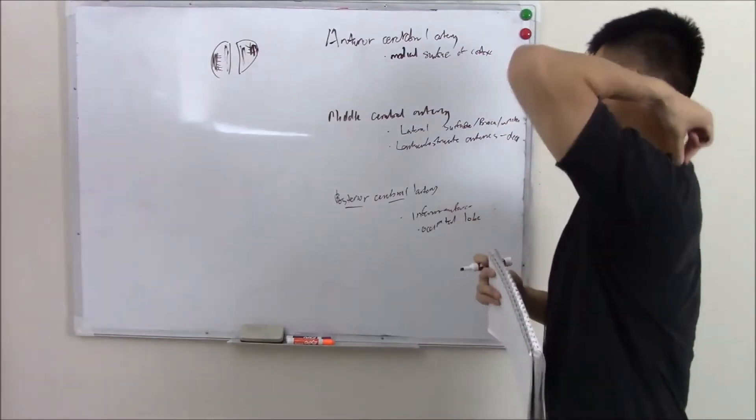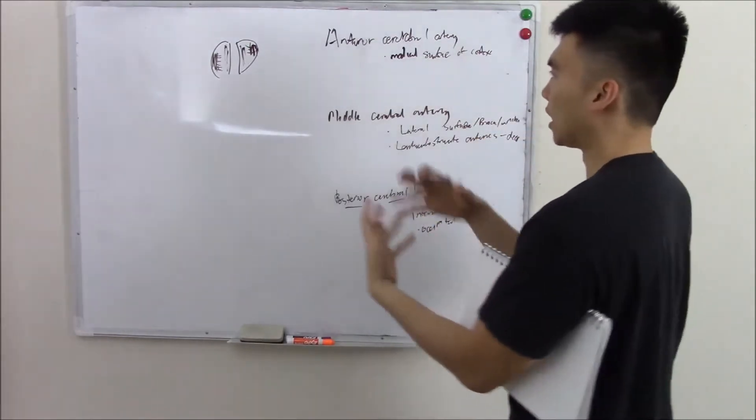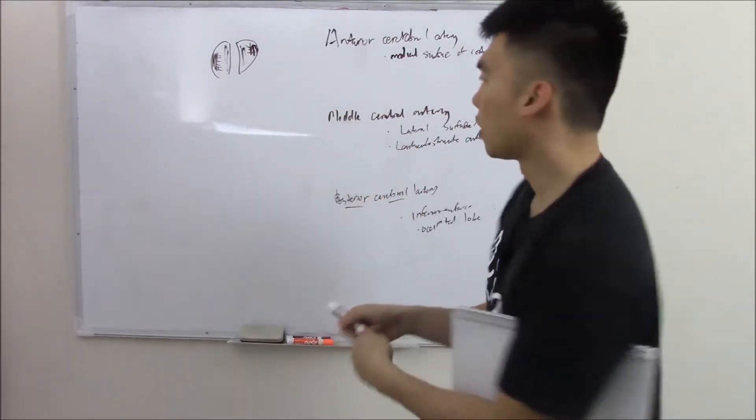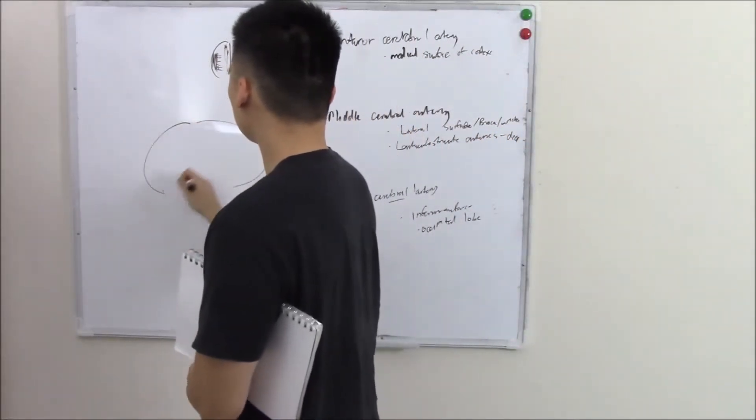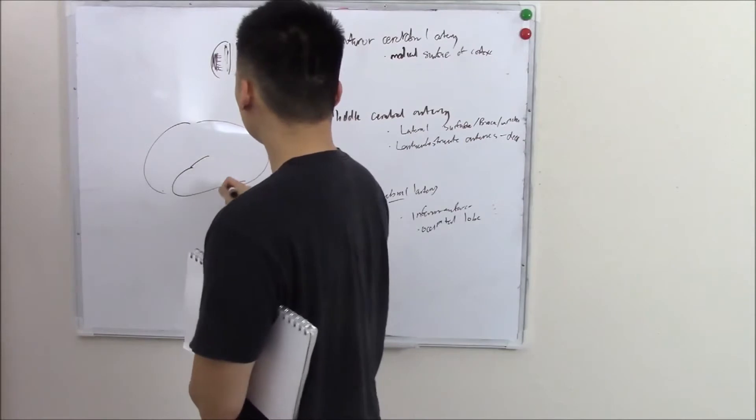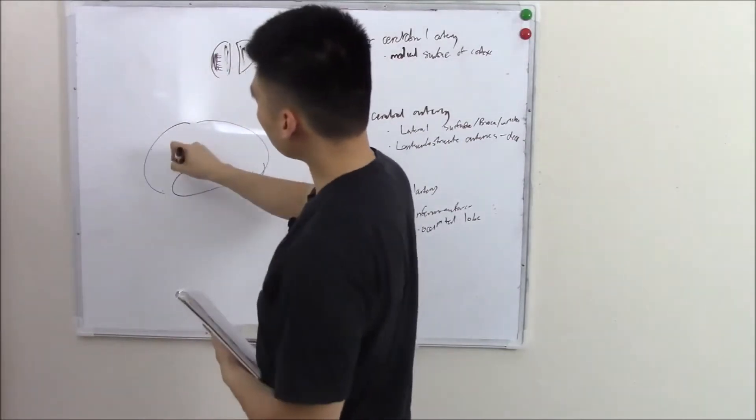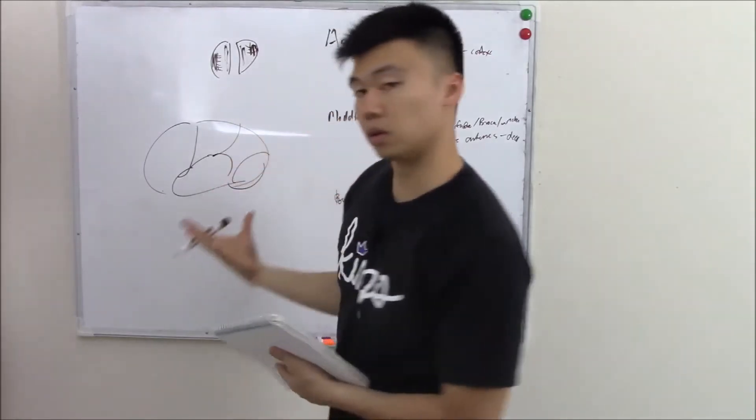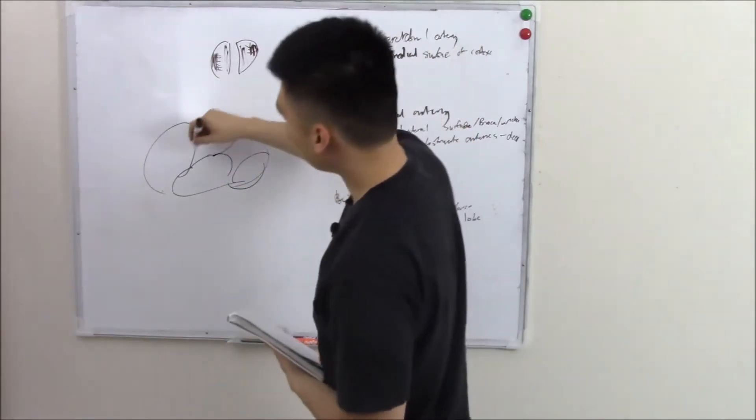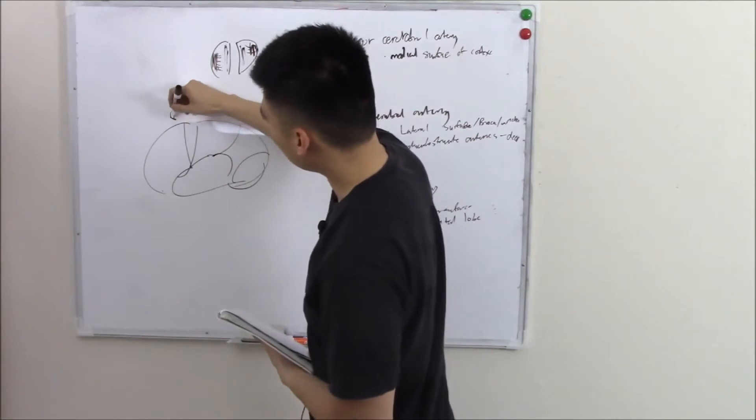Why is it important that we know what areas these arteries cover? Let's just recap our anatomy. You have your frontal lobe, parietal, your occipital lobe and your temporal lobe. And we said that there was a motor cortex in your frontal lobe. And we said there is a sensory cortex in your parietal.